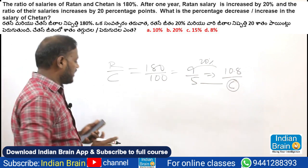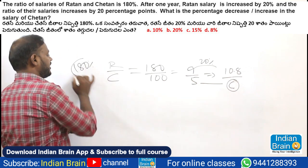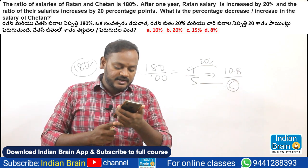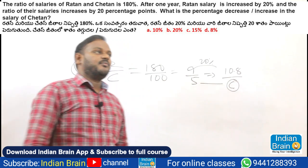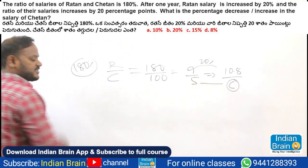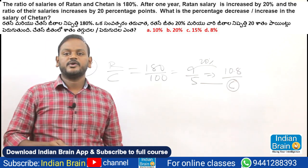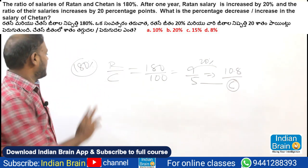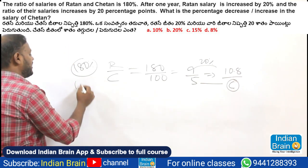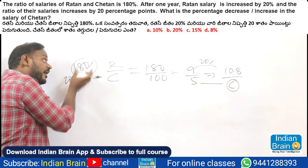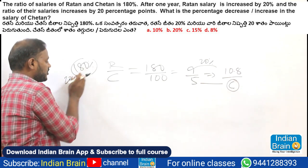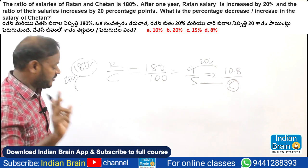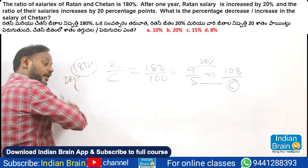Overall, Ratan is 180% and the ratio of their salaries increased by 20 percentage points. Ratan's salary is 180%, that's a 20 percentage points increase. 20 percentage points means a direct percentage increase — 180% directly adds 20% to get 200%. Percentage increment is different from percentage points increment. This is very important. The percentage increase is different from percentage points increase.